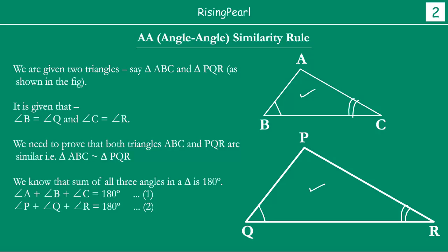If you recall, we have seen the theorem that the sum of three angles of any triangle is 180 degrees. No matter what kind of triangle you draw — right angle triangle, scalene triangle, isosceles triangle, equilateral triangle — the sum of three angles must be 180 degrees. So for triangle ABC: angle A plus angle B plus angle C must be 180 degrees. Similarly for triangle PQR: angle P plus angle Q plus angle R must be equal to 180 degrees.